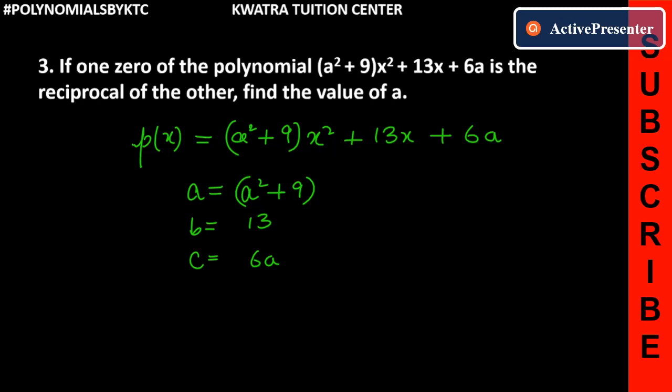Now, one zero is the reciprocal of the other. So, if one is alpha, then the other is 1/alpha. So we have two zeros, one is α, and the other is 1/α.